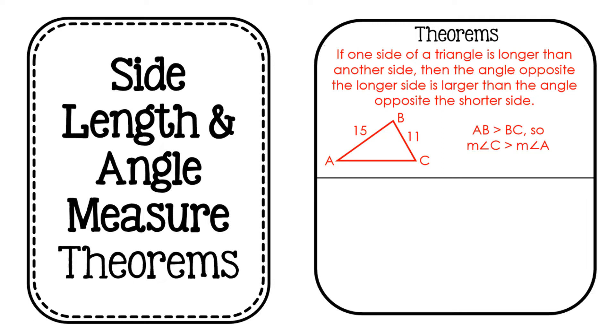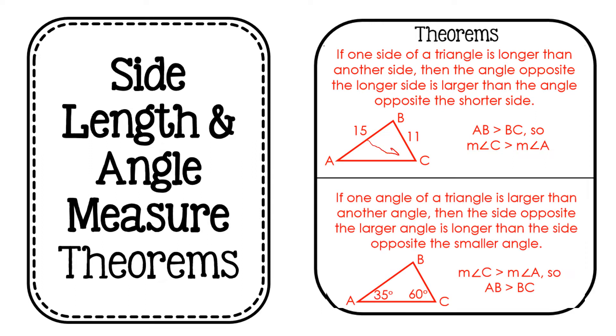So if 15 is larger than 11, the angle opposite 15, C, is greater than the angle opposite 11, the measure of A. So again,